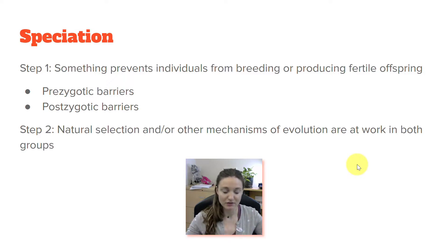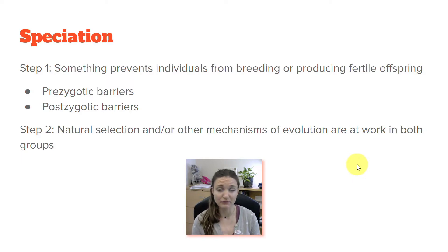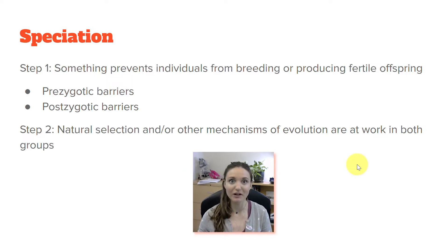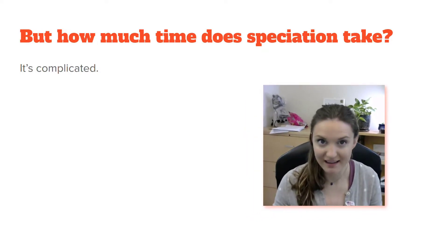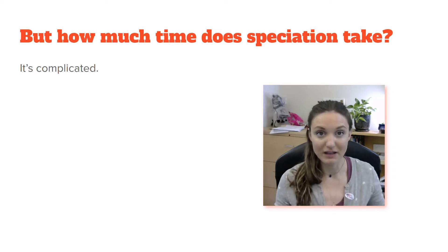Once those populations are separated, each population goes through its own process of evolution. Natural selection or other mechanisms of evolution are at work in both groups, so we accumulate genetic changes in both groups individually. After enough time, in theory, they would be different species — bring them back together and they would be so different they wouldn't be able to breed, or if they did breed, they wouldn't be able to make a viable hybrid. But how long does this take?